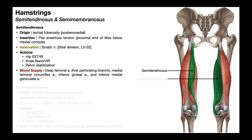The semitendinosus has a very large blood supply, including the first perforating branch of the deep femoral artery, the medial femoral circumflex artery, the inferior gluteal artery, and the inferior medial geniculate artery closer to the knee. Because the semitendinosus crosses two joints — the hip superiorly and the knee inferiorly — it has actions at both joints. It promotes hip extension and hip internal rotation, and then knee flexion and knee internal rotation.